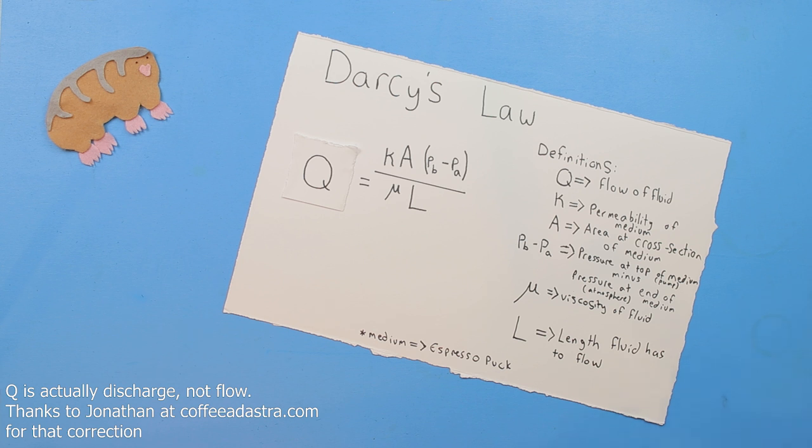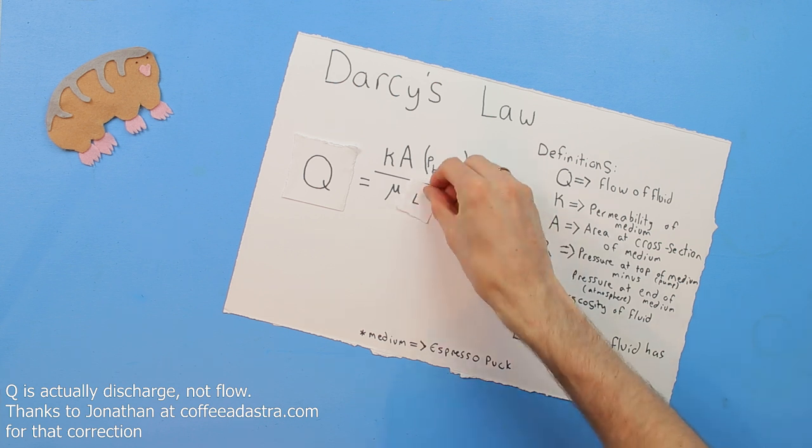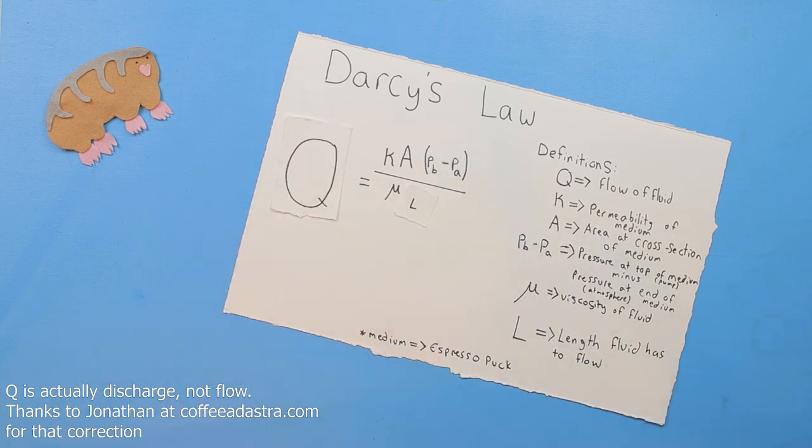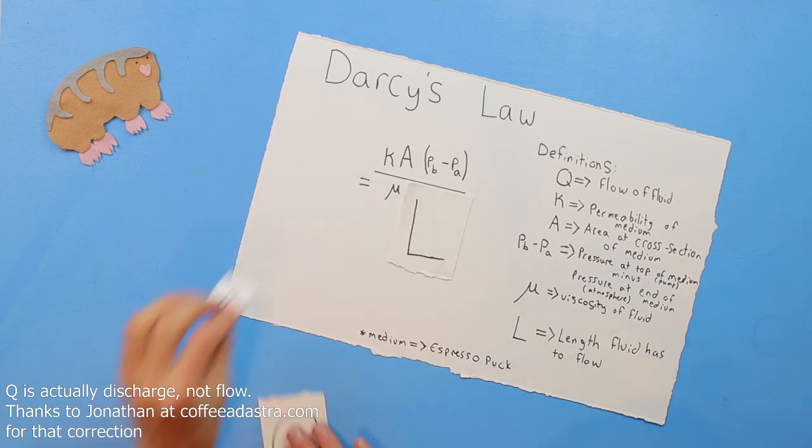It's important that l inversely affects q. Where a coffee puck is thicker, the flow is proportionally slower. It's not too far a stretch to predict that if the bed varies in thickness, it's likely to flow fastest where it's shallowest and slowest where it's thickest. Also the permeability of your medium increases flow as well, which helps illustrate why a coarser grind has a faster flow.